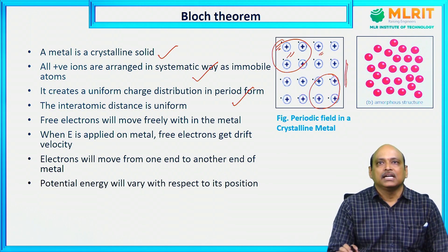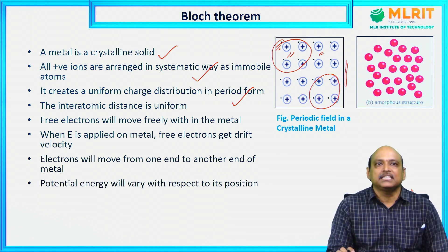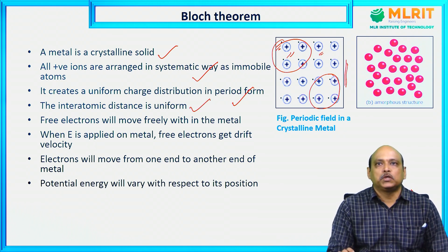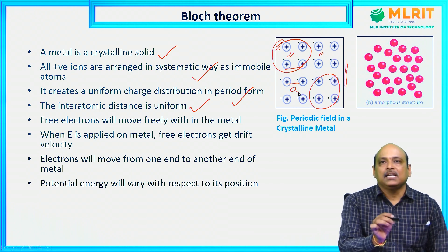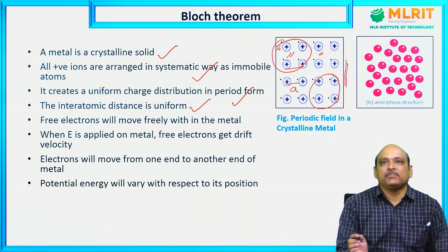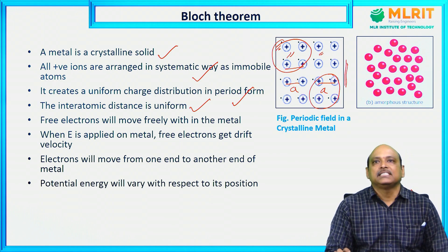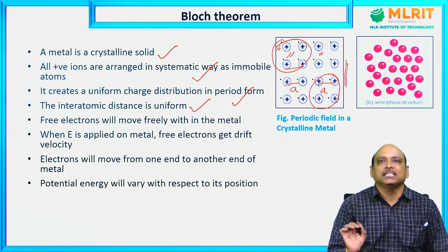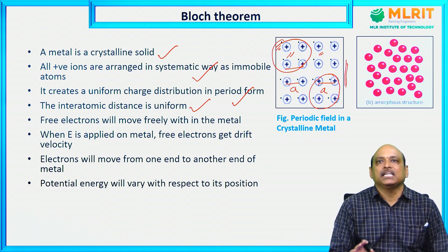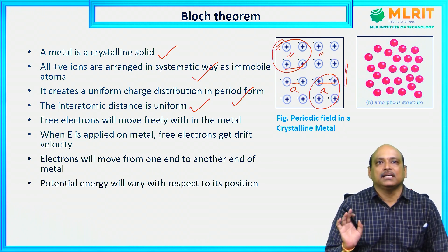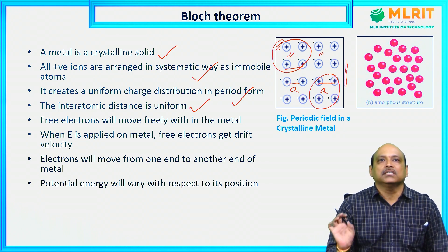One more important thing: since metals are crystalline solids, the inter-atomic distance — the distance between two positive ions — is constant. For example, two positive ions have a certain distance A between them. The adjacent two positive ions maintain the same distance, called the lattice constant in crystalline terminology. In metals, the inter-atomic distance, also called lattice constant, is always constant throughout the material.